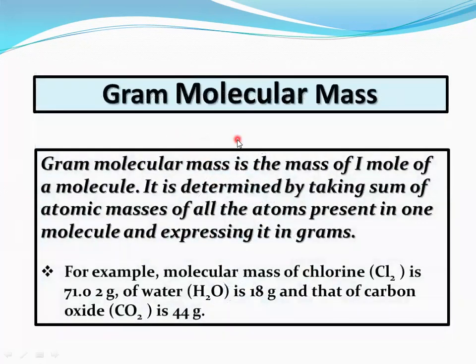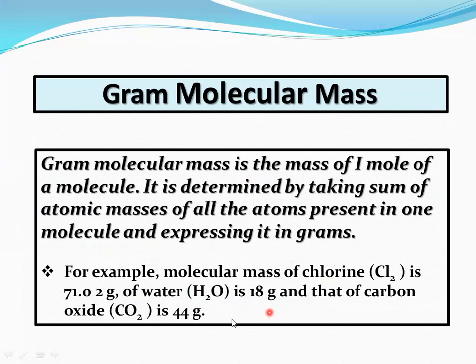Gram molecular mass is the mass of one mole of a molecule. It is determined by taking the sum of atomic masses of all the atoms present in one molecule and expressing it in grams. For example, molecular mass of Cl2 is 71.02 grams, water is 18 grams, and carbon dioxide is 44 grams — we place grams instead of AMU.